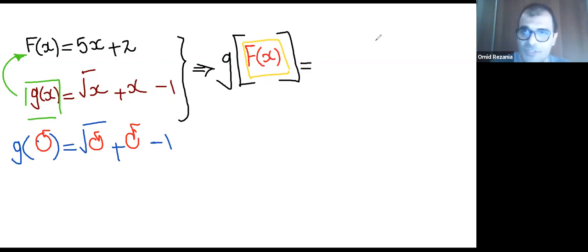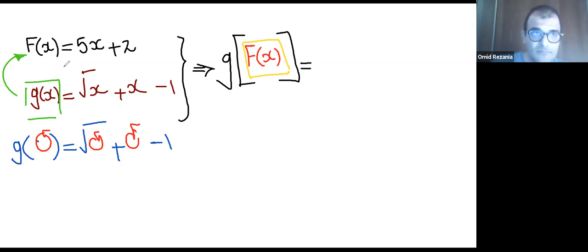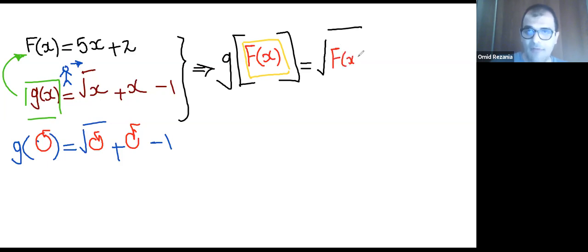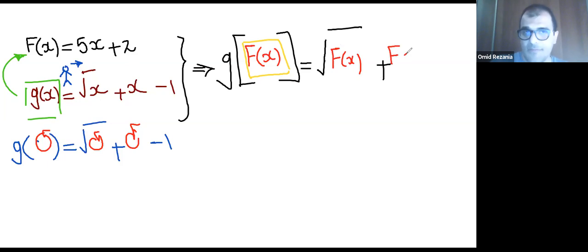The same story here. I have f(x) inside the stomach of g(x). I walk along g — wherever I see x, I replace it with f(x). So it becomes the square root of f(x), then plus f(x), minus one. Is it clear for everyone what happened? Yes, it's clear.